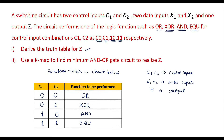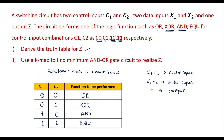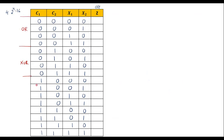When C1 is 0 and C2 is 1, it should perform the XOR operation — that covers rows 4 through 7. When C1 is 1 and C2 is 0 (rows 8–11), it should perform the logical AND operation. The remaining rows (12–15), where both C1 and C2 are 1, perform the XNOR (equal) operation.